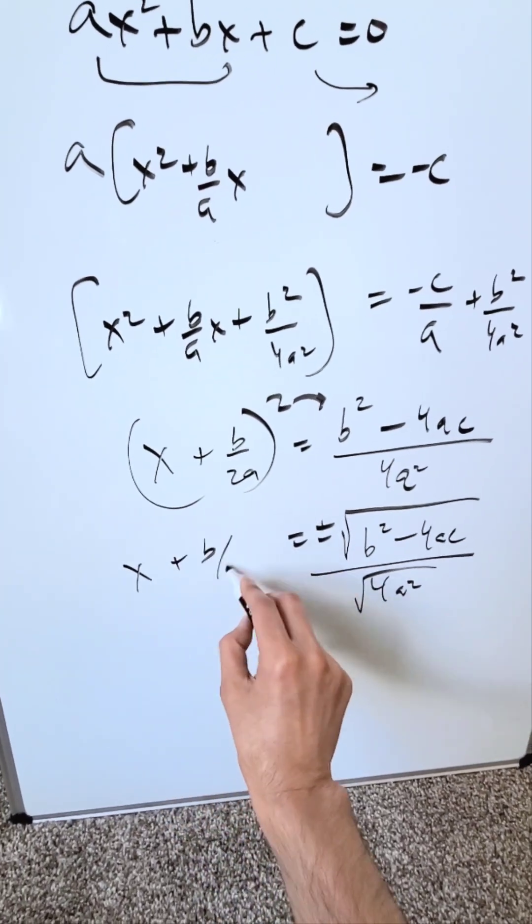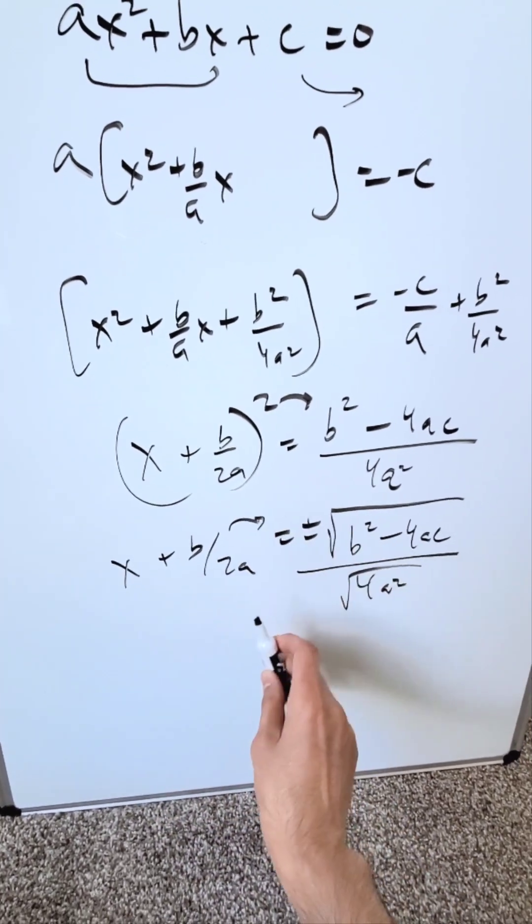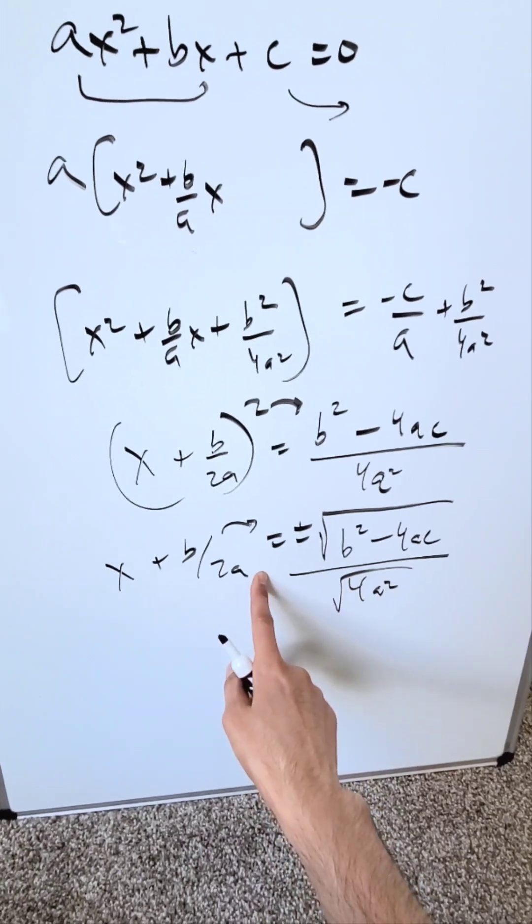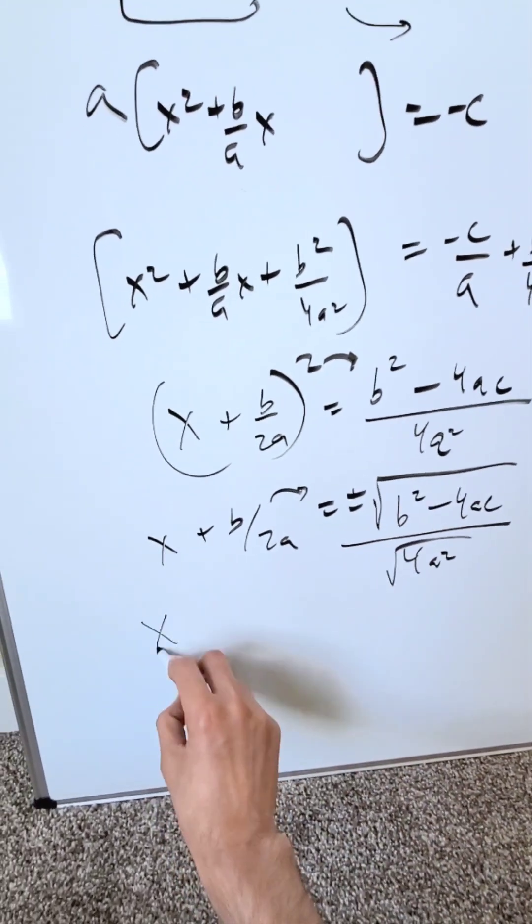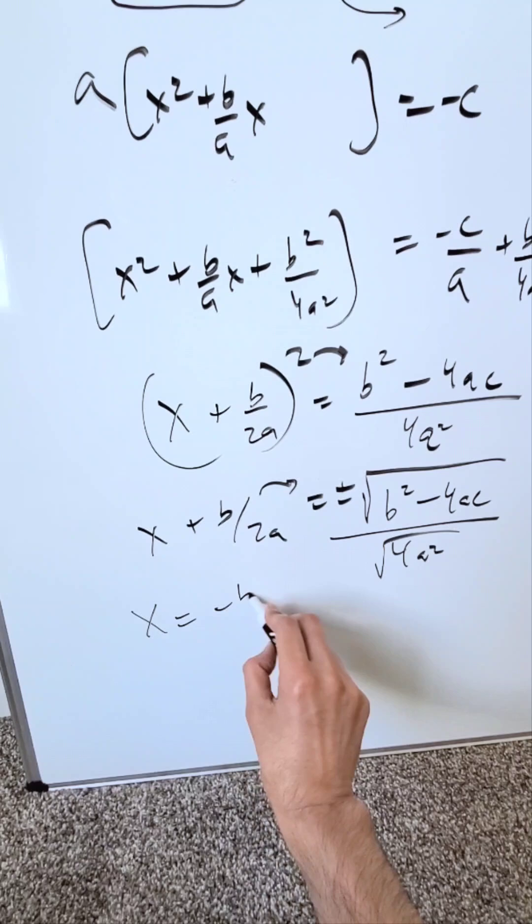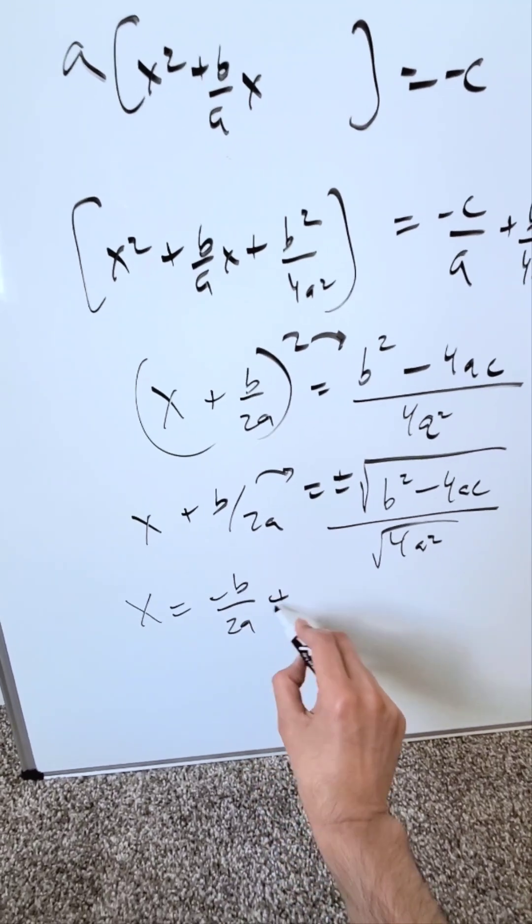You have x plus b over 2a is equal to this. Push this on the other side and it'll subtract. But I'm going to put this term before all of this term because you can. You have x is equal to minus b over 2a plus and minus.